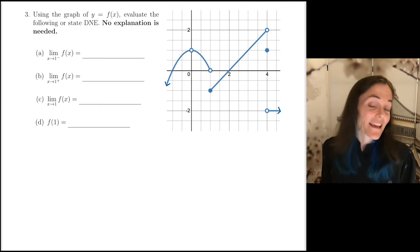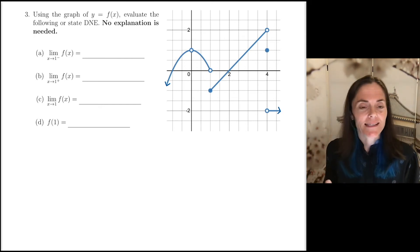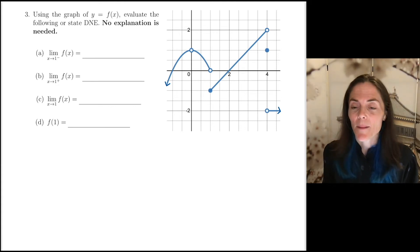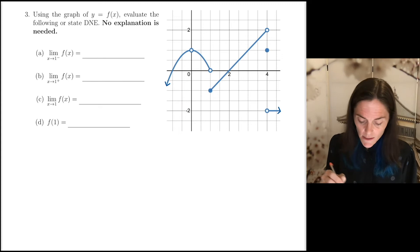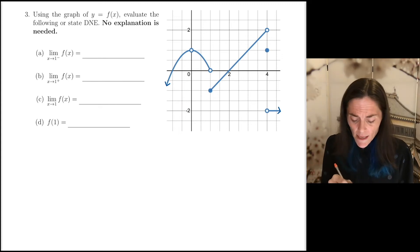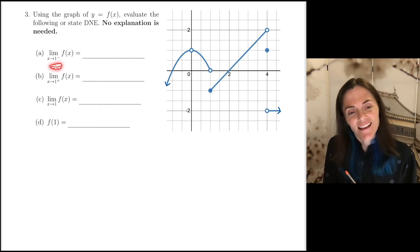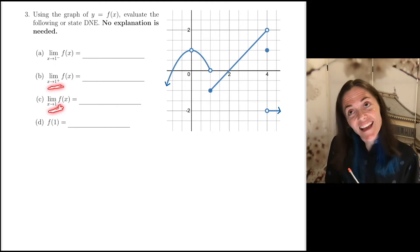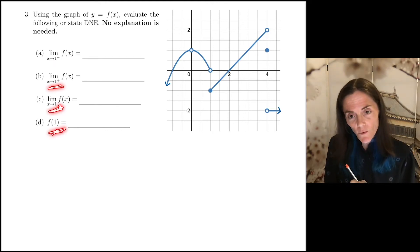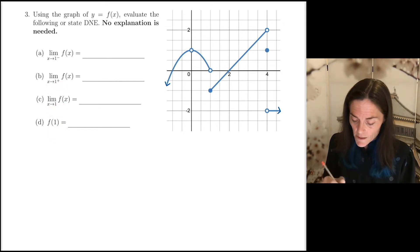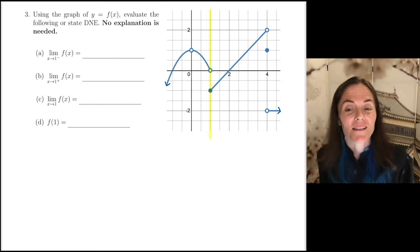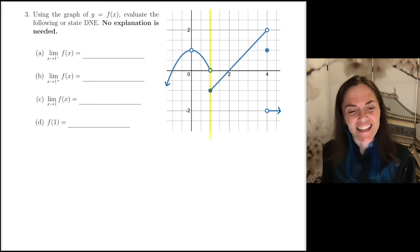Now we are on number 3, and we have moved into the limits section. We want to evaluate four things about this function f of x from the graph, all centered around x equals 1: the limit from the left, the limit from the right, the overall two-sided limit, and the function value.